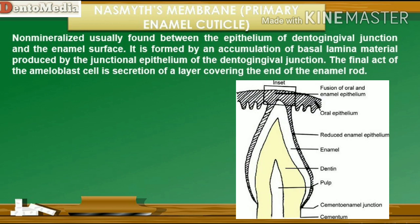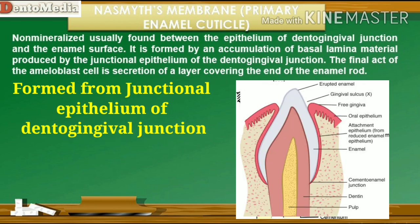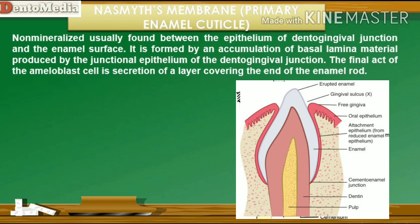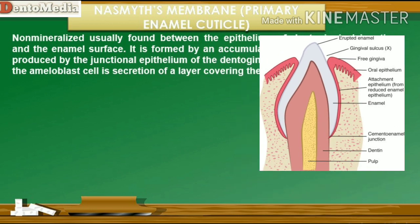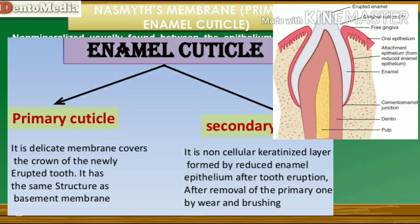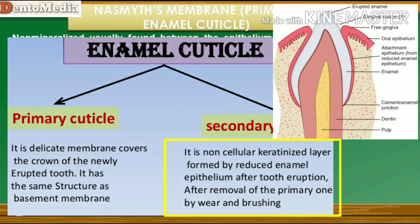Nasmyth's membrane, or primary enamel cuticle, is a non-mineralized layer usually found between the epithelium of the dentogingival junction and the enamel surface. It is formed by an accumulation of basal lamina material produced by the junctional epithelium of the dentogingival junction. Enamel is incapable of repairing itself once destroyed because the ameloblast cell degenerates following the formation of the enamel rod. The final act of the ameloblast cell is secretion of a layer covering the end of the enamel rod — this layer is referred to as Nasmyth's membrane or the primary enamel cuticle, named after its first reporter. This delicate membrane covers the entire enamel of a newly erupted tooth and is worn away by mastication and cleaning. The secondary cuticle is known as dental cuticle, covers enamel and a part of cementum, and is about 10 microns in thickness.